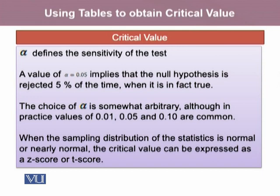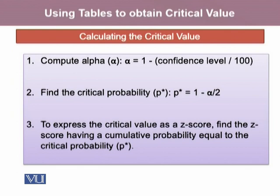When the sampling distribution of statistics is normal or nearly normal, the critical value can be expressed as a z-score or a t-score. When calculating the critical value, the very first step is to define alpha.